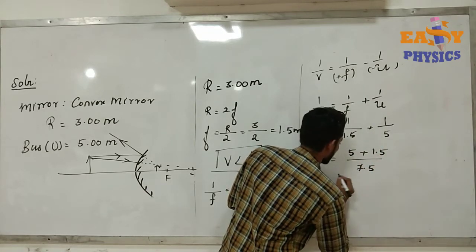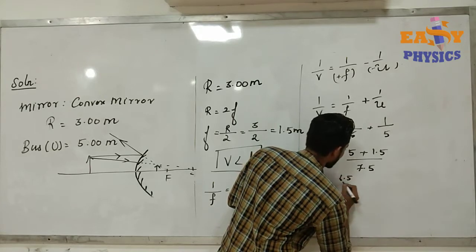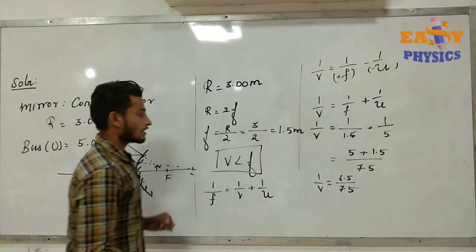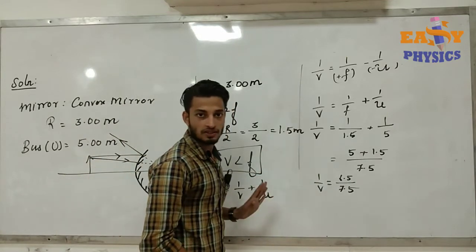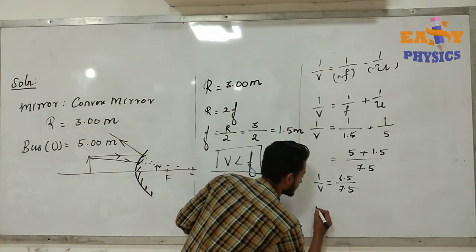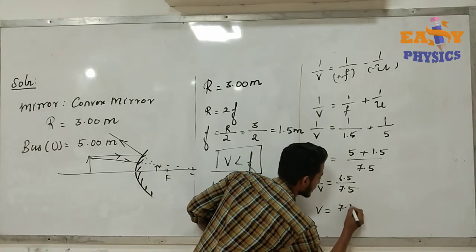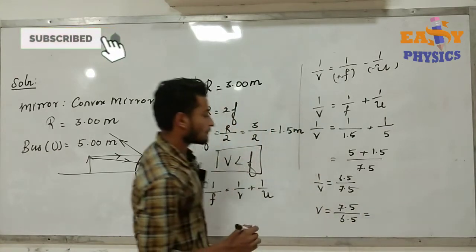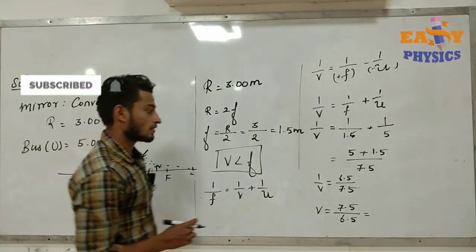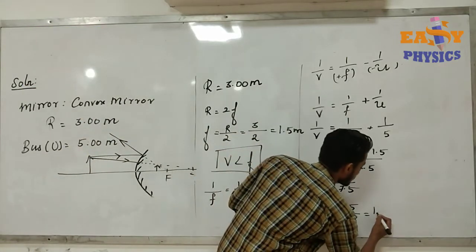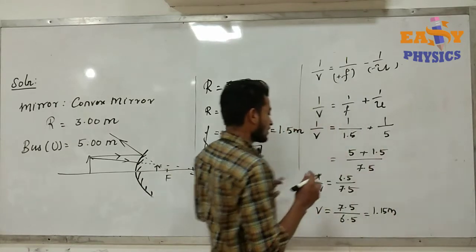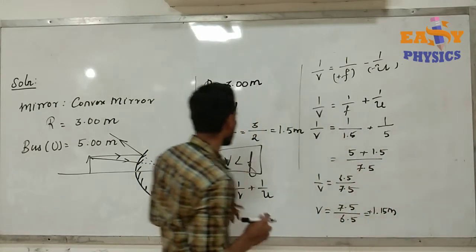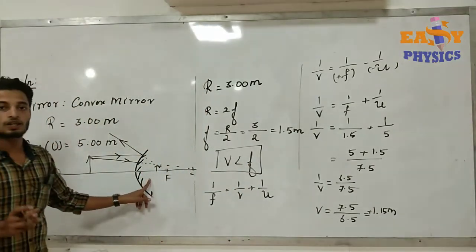So 1 by v equals 6.5 divided by 7.5. Taking the reciprocal, the image distance v equals 7.5 divided by 6.5, which equals approximately 1.15 meters. Since v is positive, the image is virtual.